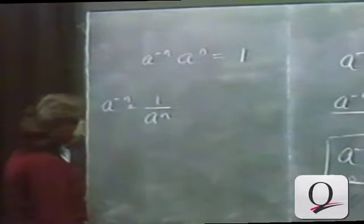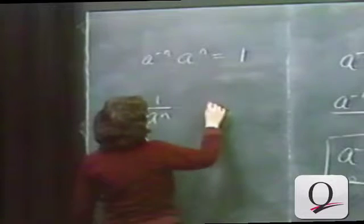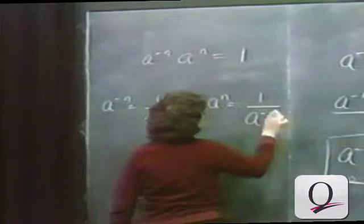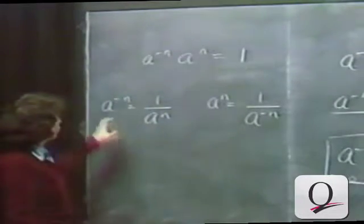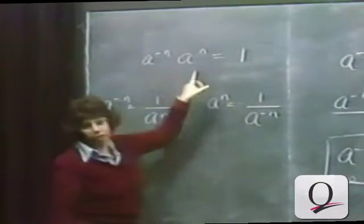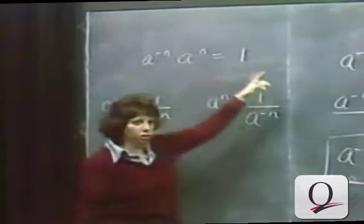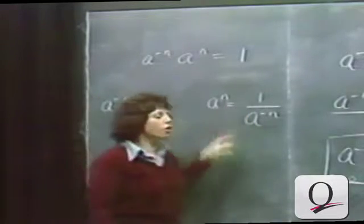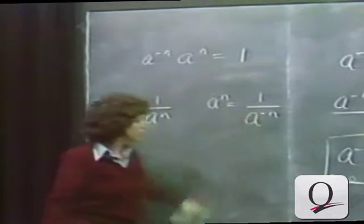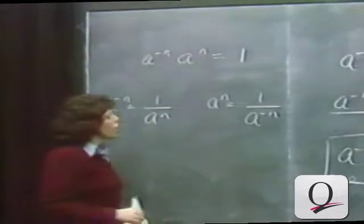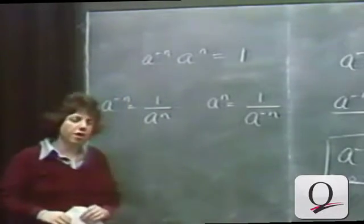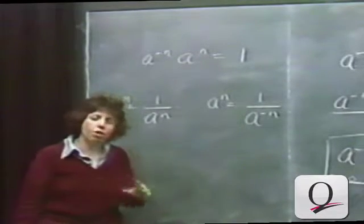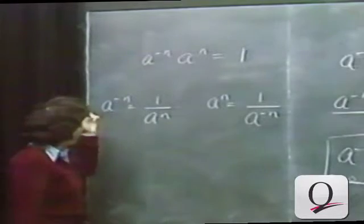We could have also divided both sides by a to the minus n to get that a to the n is 1 over a to the minus n. So a to the minus n and a to the n are reciprocals — they multiply to 1. You can use either of these expressions, whichever is more convenient. If we're simplifying an algebraic expression, our goal is that the final answer has no negative exponents in it.